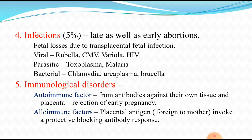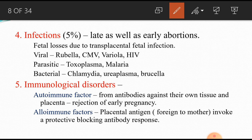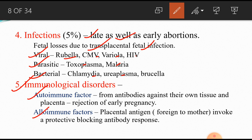Next, infection. Maternal infections in both early and late cases can cause abortion through transplacental spread — meaning the mother's infection passes through the placenta to the fetus — which can be viral, parasitic, or bacterial infection. Then immunological factors: autoimmune or alloimmune. In autoimmune factors, the body forms antibodies against its own tissue and placenta, which reject early pregnancy. In alloimmune factors, placental antibodies foreign to the mother invoke a protective blocking antibody response.